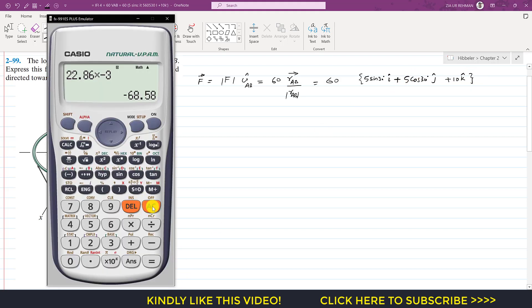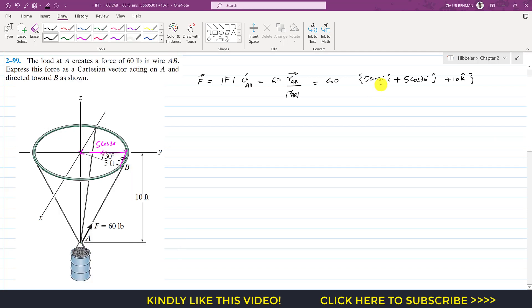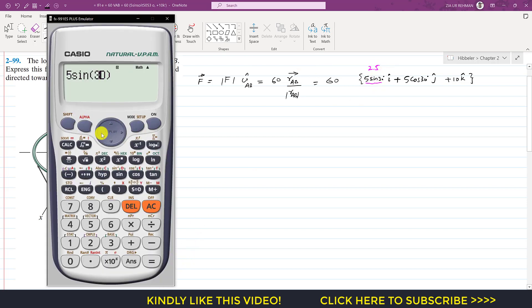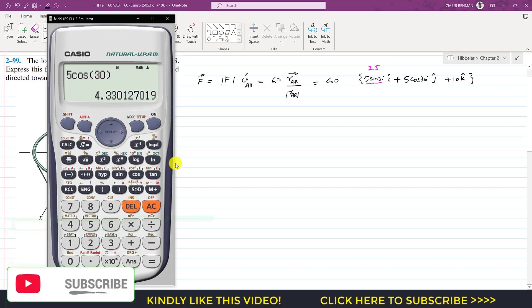Let me simplify it: 5 sin 30° is 5 divided by 2, which is 2.5 i. Similarly, 5 cos 30° is 4.33 j.